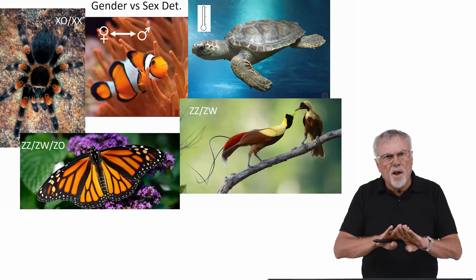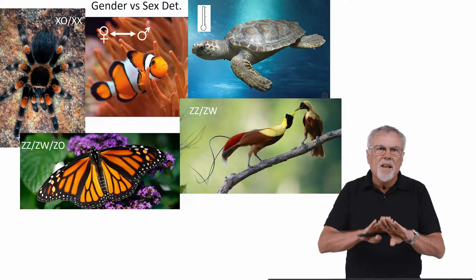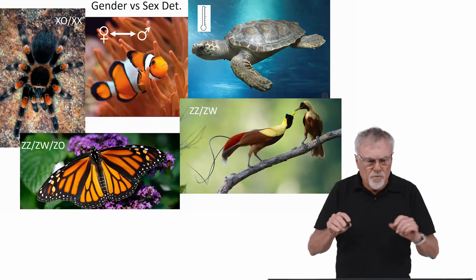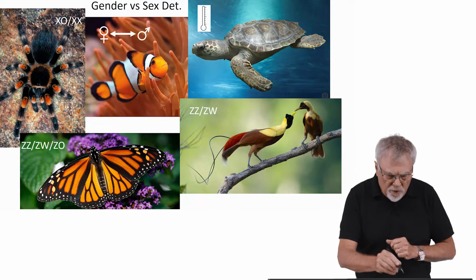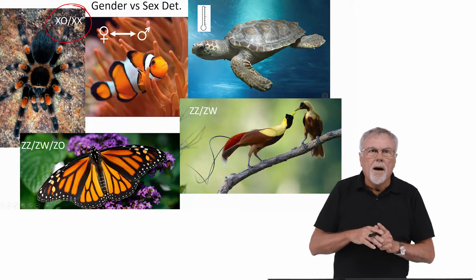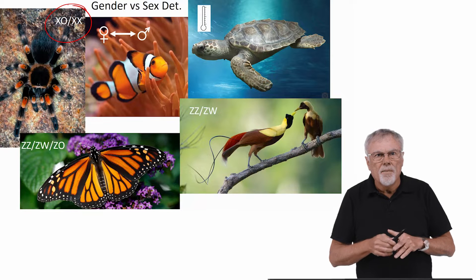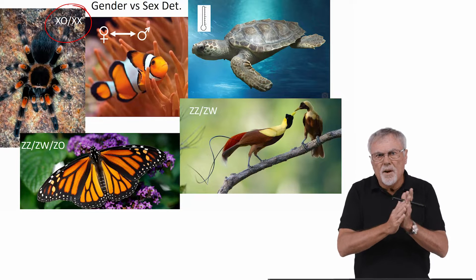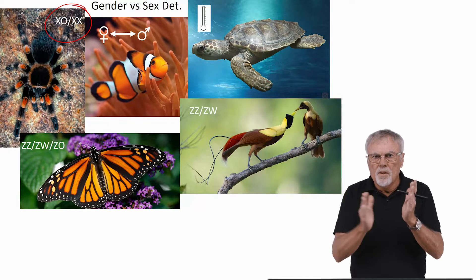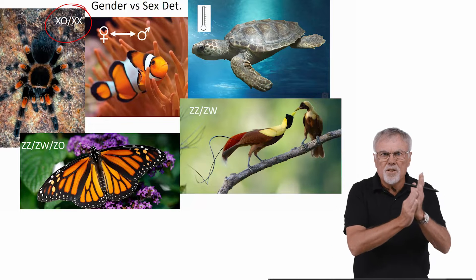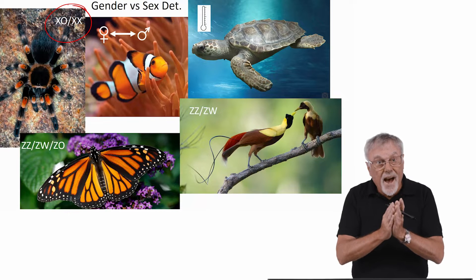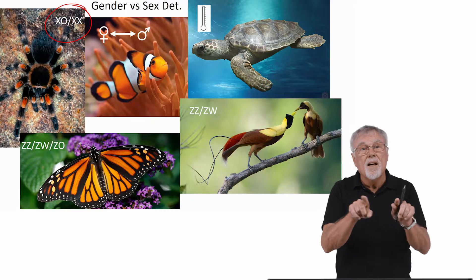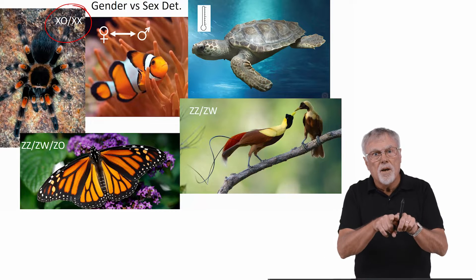What they have for underlying genetic sex determination can be highly variable. For example, if you look at spiders, males are XO — not XY. They're missing a Y chromosome. So XO is a male. XX, the homogametic sex, they are females.